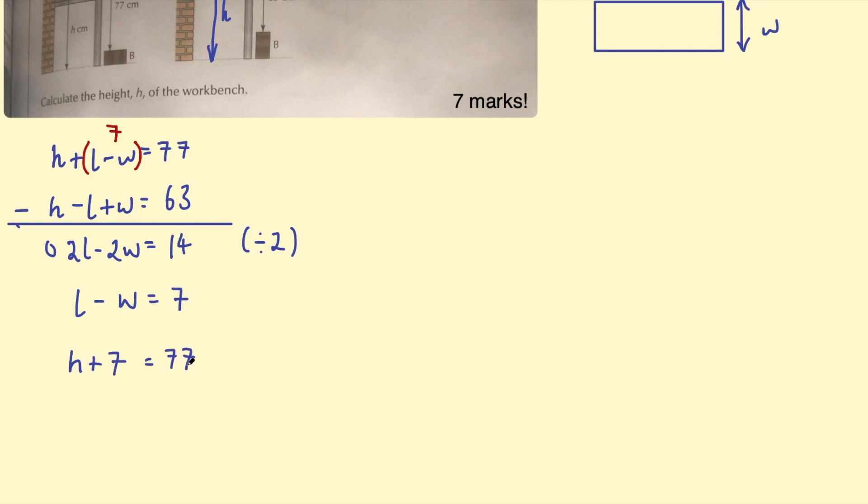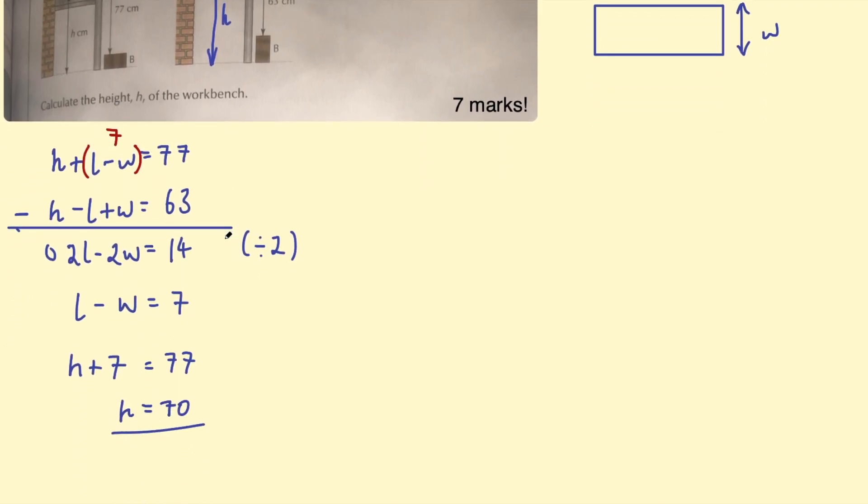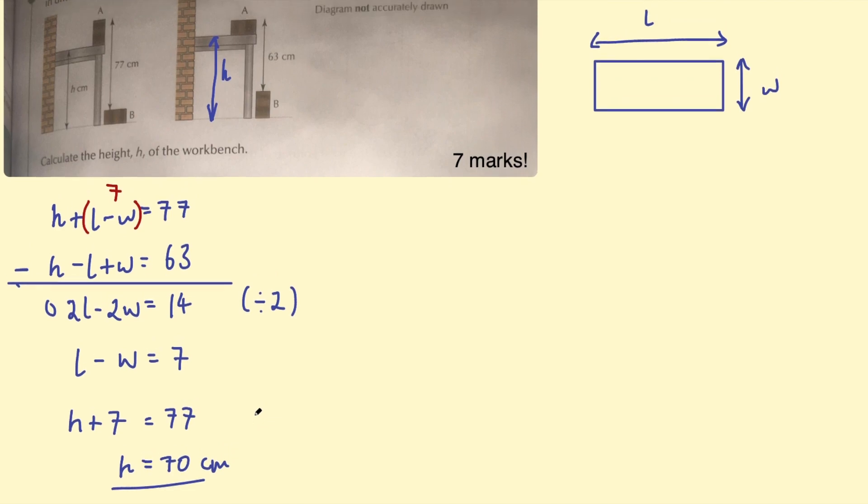What plus seven equals 77? Well, H must equal 70, right? H equals 70. And that's your final answer for H. So going back to the question again, calculate the height H of the workbench, H equals 70 centimeters. Okay. So that is one way to do this.